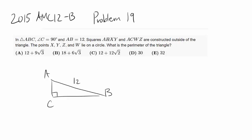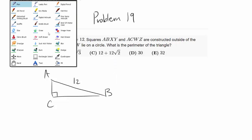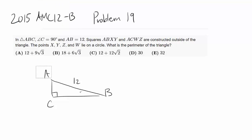AB is 12 and squares ABXY and ACWZ are constructed outside the triangle. So let's construct the squares. That's a bit of squished square. Let's move this triangle further down so I can draw this somewhat to scale.